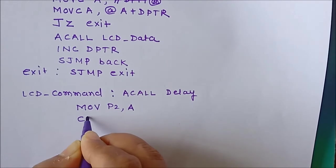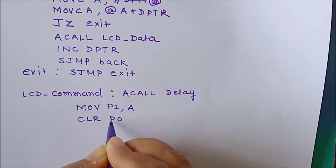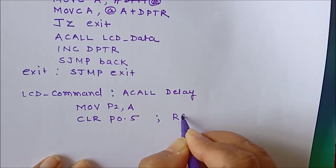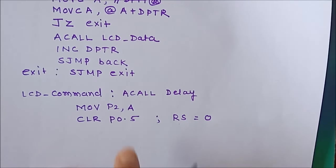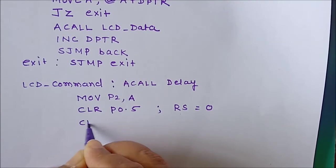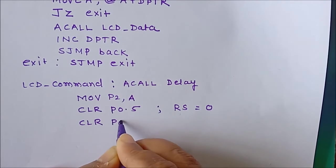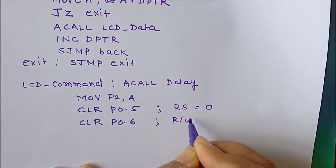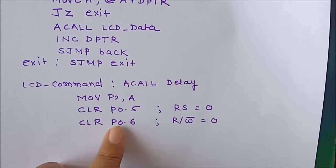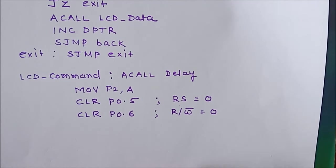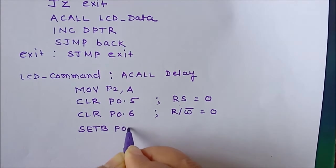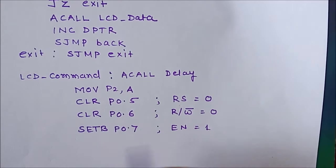After placing data on P2, we clear the RS pin — P0.5 is connected to RS — setting RS equal to 0, which selects the command register. Next, we clear P0.6, which is connected to the R/W pin, setting R/W to 0 for a write operation. Then we send the enable high-to-low pulse: we use SETB P0.7 to make the enable terminal high, then immediately clear P0.7 to bring it low.